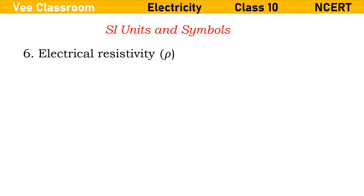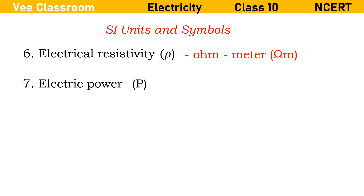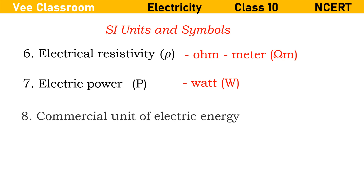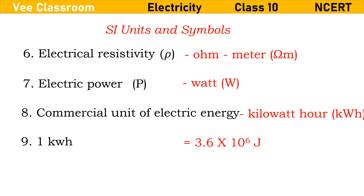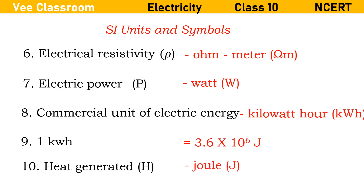Electrical resistivity: ohm-meter. Electric power: watt. Commercial unit of electric energy: kilowatt-hour. One kilowatt-hour is equal to 3.6 × 10⁶ joule. Heat generated: joule. Thank you so much.